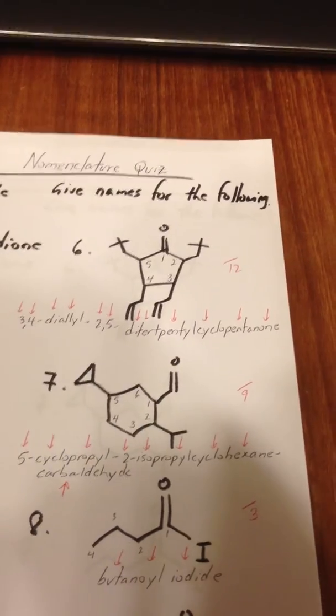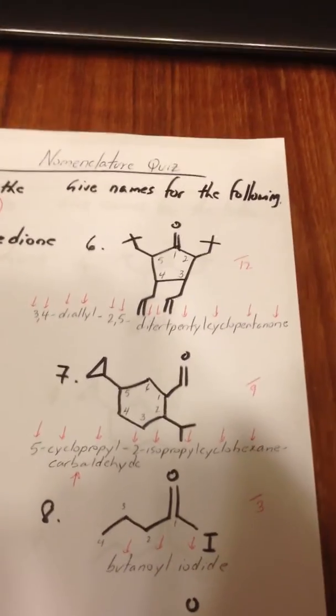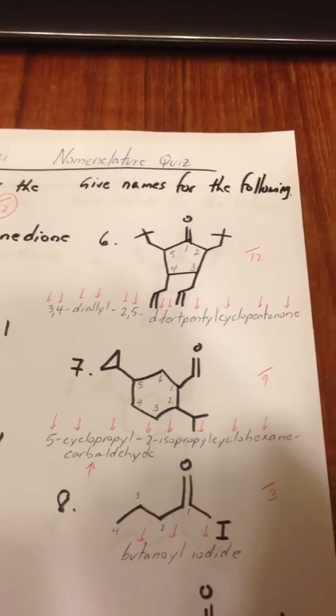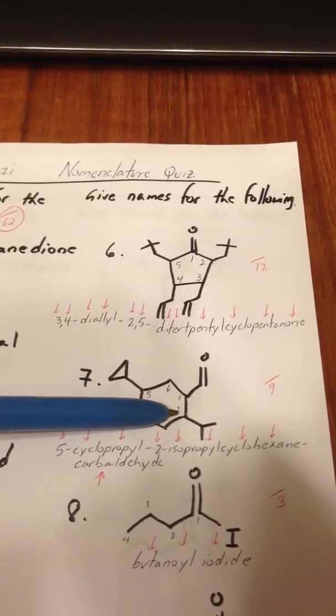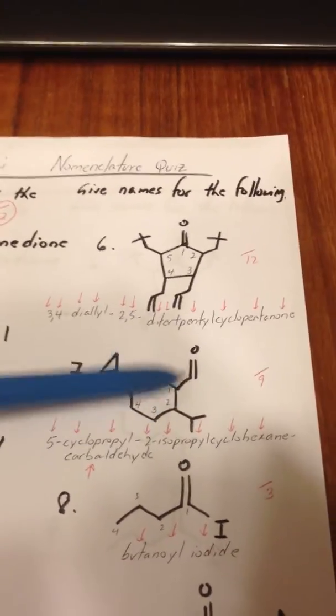When an aldehyde is placed on a ring, the molecule's name ends in carbaldehyde, so we say 5-cyclopropyl-2-isopropyl-cyclohexane-carbaldehyde.